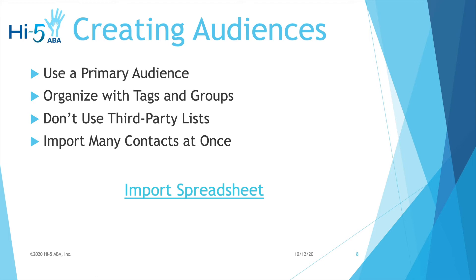Speaking of audience, let's talk about creating an audience. With a free plan, you receive one audience; with some of the paid ones, you can get three to five. But even Mailchimp recommends only having one audience, and then it's best to organize that audience with groups and tags. We can go more into that later.